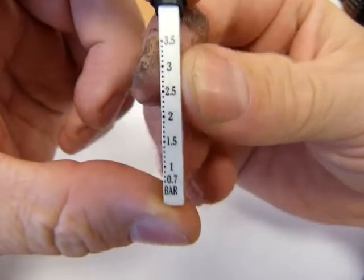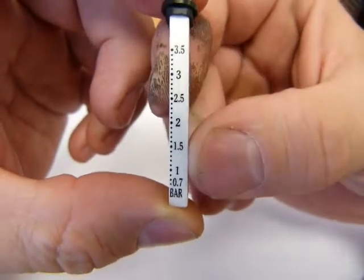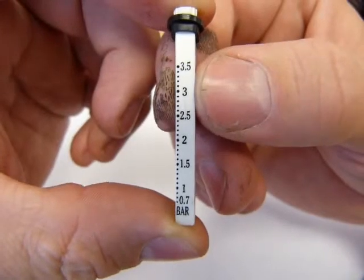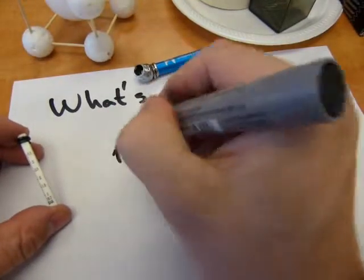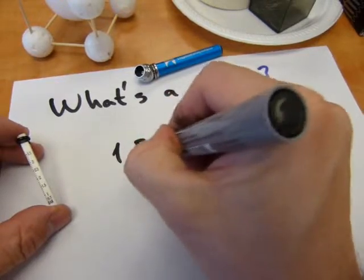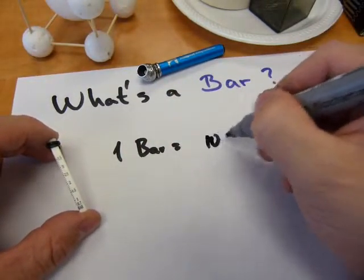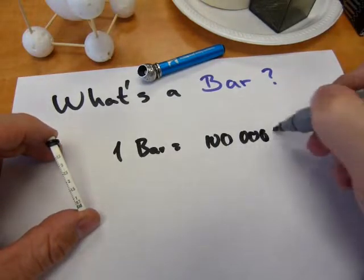On this side you can see bars 1, 2, 3, 2.5, 3.5. A bar equals 100,000 Pascals.